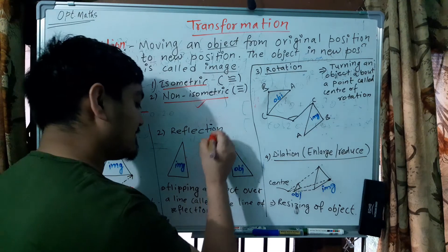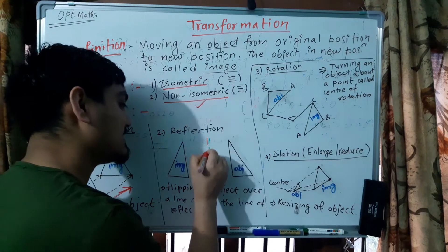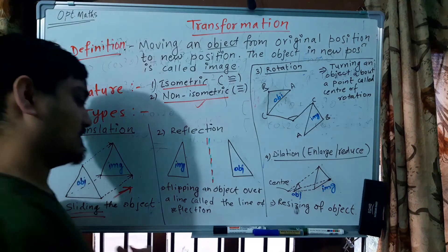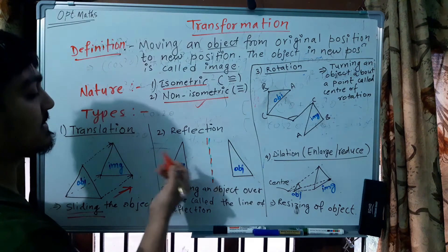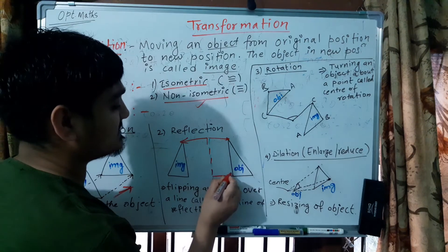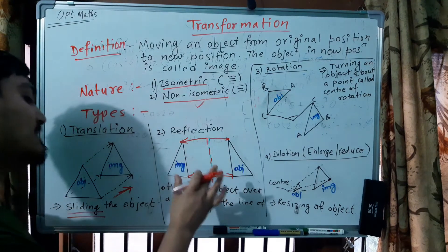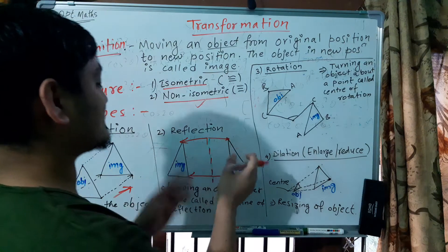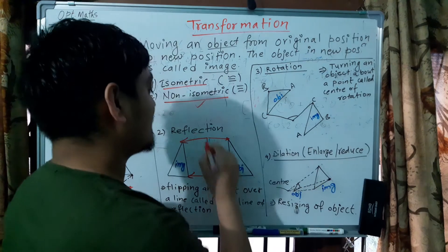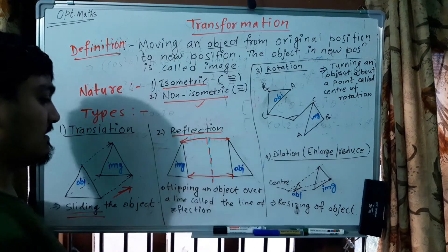The second type is reflection. In reflection, there is a line of reflection, which is a reference line, and the object is flipped across this line. This flipping across the line of reflection is called reflection.